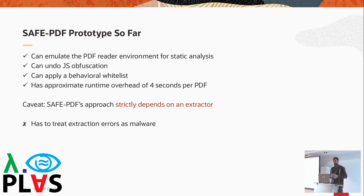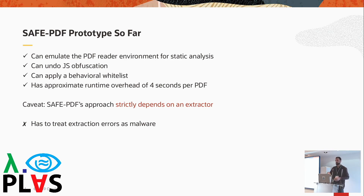Overall, our prototype inspects behavior after program analysis finishes. If deemed unacceptable, it marks the document as malicious and in most cases generates a good explanation. We've modeled the reader environment so static analysis of embedded PDF code can work. Our abstract interpretation automatically undoes JavaScript obfuscation using internal methods like escaping, unescaping, and string operations, as long as these don't depend on external input. We found that despite being a heavyweight program analysis technique, it is quite efficient — taking only about four seconds per PDF on average.